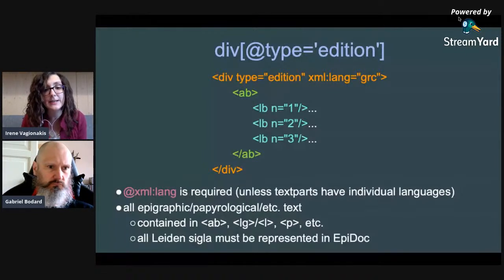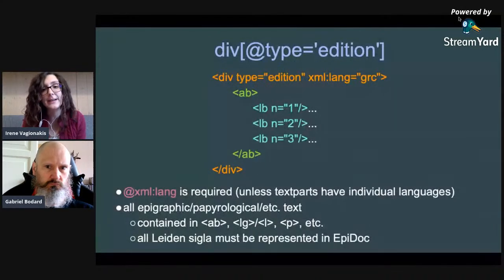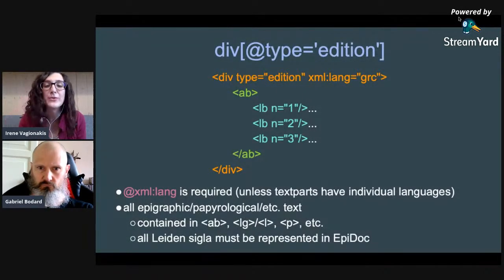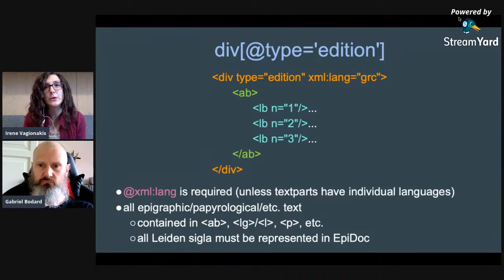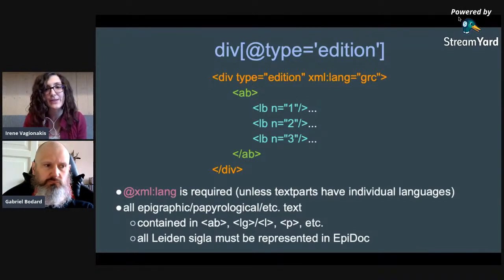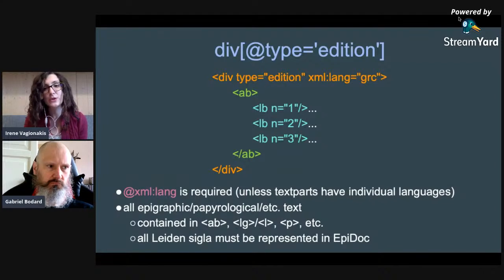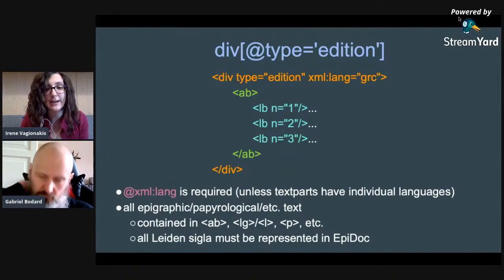If it is a metrical text, inside the line group you will also have the L metrical line element, but you will find more information on this in another video. Inside the text, all the Leiden signs should be represented using EpiDoc elements — so gaps, lacunae, and restorations. Everything including all the Leiden symbols such as square brackets and round brackets should be replaced by specific EpiDoc elements.